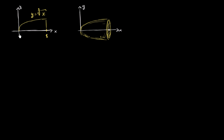What we're going to do in this video is take the function y is equal to the cube root of x and then rotate this around the x-axis. If we do that, we get a solid of revolution, and we're doing it between x is equal to 0 and x is equal to 8. You could find the volume of this quite easily using the disk method, but to show an alternate way, we're going to use the shell method — rotating around a horizontal line, specifically the x-axis.